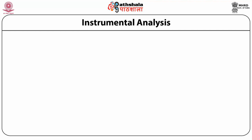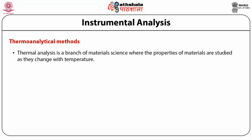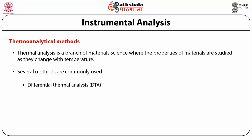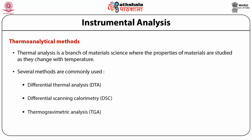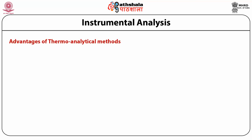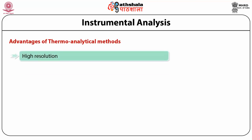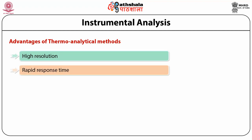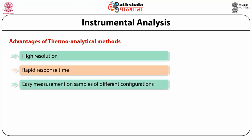Another group of methods used for different types of analysis are thermoanalytical methods. Thermal analysis is a branch of material science where the properties of materials are studied as they change with temperature. Several methods commonly used include differential thermal analysis, differential scanning calorimetry, and thermoanalytical analysis. These methods have the advantages of high resolution, rapid response time, and easy measurement of samples of different compositions.